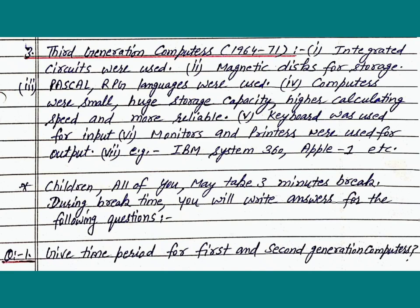Next is third generation computers from 1964 to 1971. Integrated circuits were used. Magnetic disk for storage was used. Pascal and RPG languages were used. Computers were small, with huge storage capacity, higher calculating speed and more reliable. Keyboard was used for input. Monitor and printer were used for output. For example: IBM System 360, Apple One, etc.